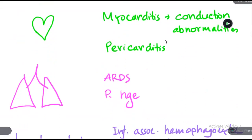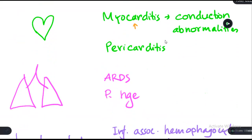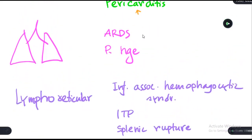In the cardiac and cardiovascular system, there can be inflammation of the myocardium — myocarditis — which can lead to conduction abnormalities. There can also be inflammation of the pericardium, pericarditis. In the respiratory system, there can be ARDS (acute respiratory distress syndrome) or pulmonary hemorrhage.